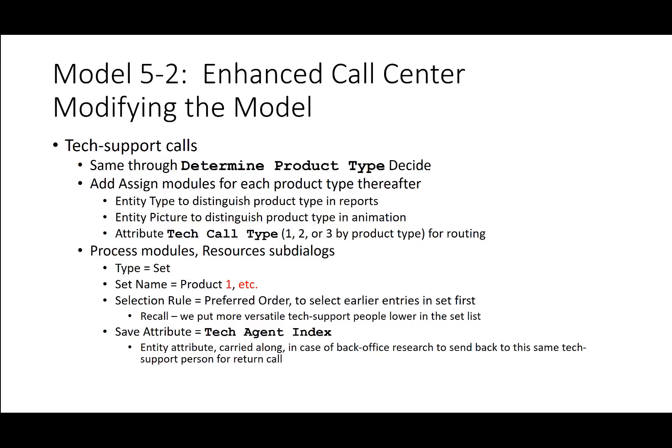For tech support calls, after the determined product type decide, add assign modules for each product type covering entity type to distinguish product type in reports, entity pictures for animation, and the attribute tech call type 1, 2, or 3 for routing. Process modules have resources sub-dialog type set to 'set,' with set name for product 1 and on, using pulldowns. Selection rule equals preferred order to select earlier entries in the set first — the least versatile people are pulled first, saving the more versatile. The save attribute is 'tech agent index,' an entity attribute carried along for back office research to send the response back to the same tech support person.